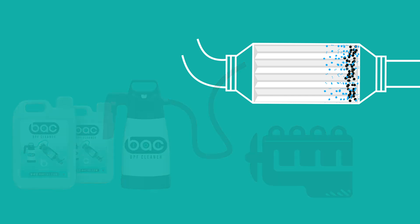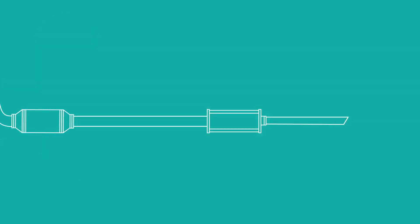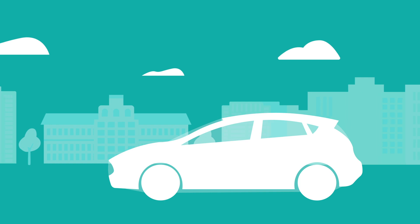You will notice deposits exiting the exhaust system for the first 10 to 15 minutes, as the oil, grease, soot, and ash are expelled from the DPF. This is completely normal. The vehicle now has a new lease of life and is ready to get back on the road.